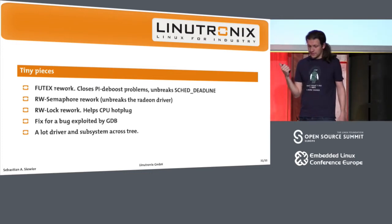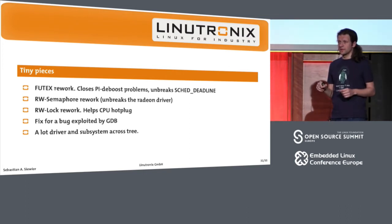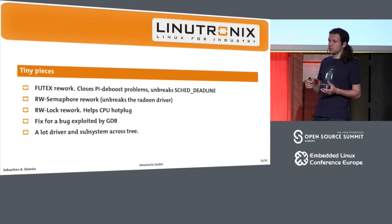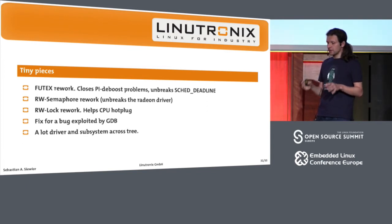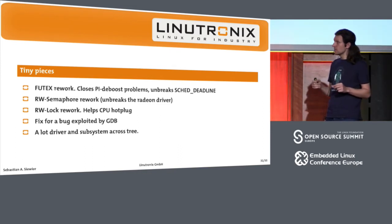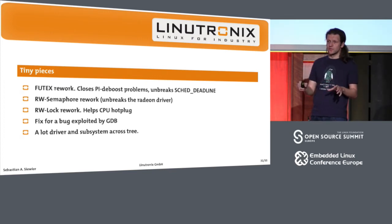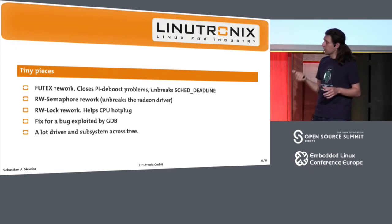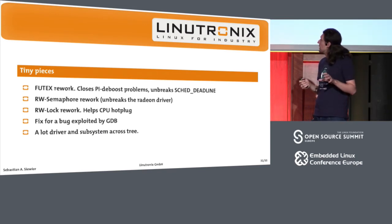We had a rework for the RW semaphore. In vanilla, a semaphore can be taken by multiple readers and one writer. But in RT, this is something we cannot have, because having multiple readers means we would have to boost multiple readers simultaneously, which doesn't work. What we had in RT was only one reader or one writer — basically making it a mutex. This was working in most cases, but we accidentally broke the random driver. We got reports that doing crypto behind the random driver would freeze the system for half an hour before it eventually fixed itself. Once we reworked the RW semaphore to allow multiple readers, the random driver was magically working again — plus we also got the performance benefits back since we can now have multiple readers in the reader section.